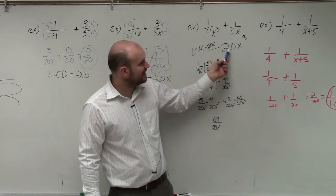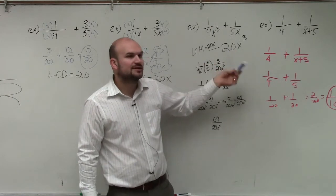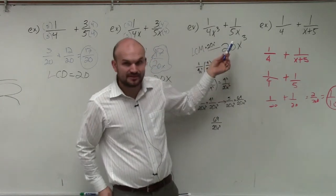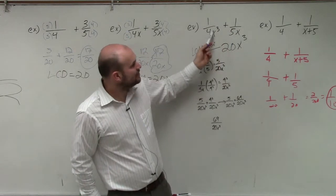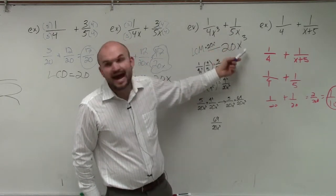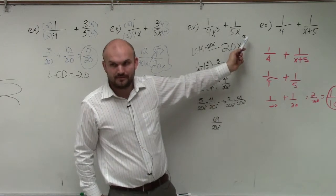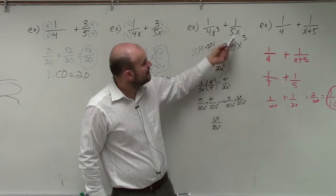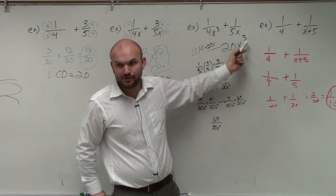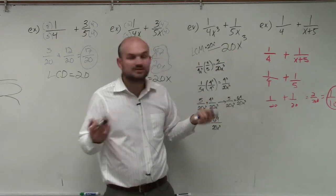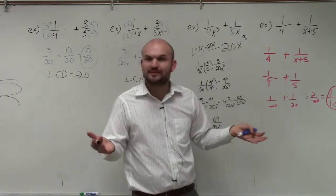But now let's look at what is the smallest number that x and x cubed both divide into. Now, x cubed - we can't say it's x because x cubed doesn't divide into x, right? But x cubed and x both divide into x cubed. Because remember the rules of exponents: when you divide, you subtract the powers.